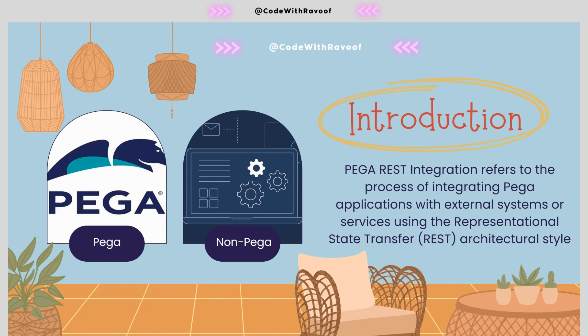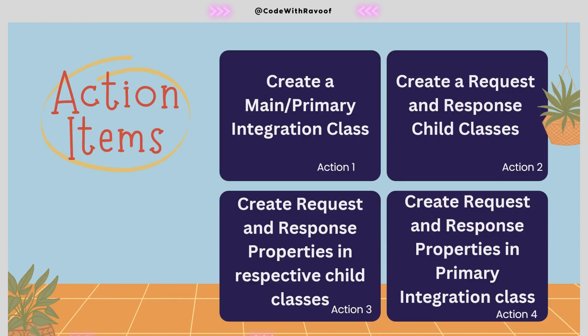In this session I will be showing how to create different classes with respect to primary and child classes. The action items are: number one — creation of the primary integration class, how we need to create it and what will be the context. Action number two — creation of the request and response child classes. Action item three — creation of the request and response properties in the respective child classes.